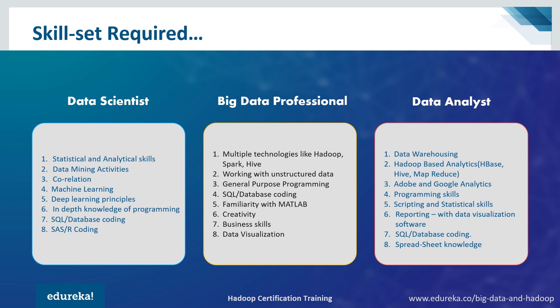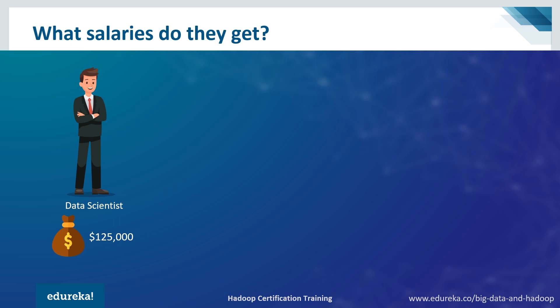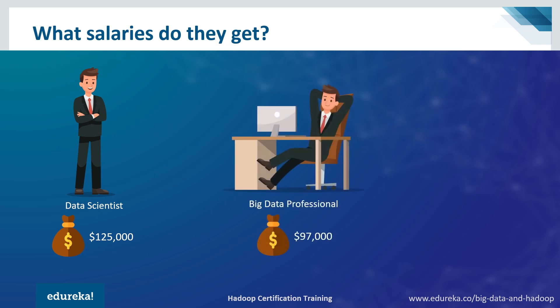Jobs in these three fields are quite high in demand, which rewards you with a fat paycheck. According to PayScale, data scientist is a lucrative career choice in the United States with an average salary of $125,000 per year. A top-level data scientist with extensive experience can earn as much as $148,000 a year — one of the highest paying positions in the entire IT industry. The salary for a big data professional is around $97,000 per year, with a big data developer earning around $95,000 and a big data architect around $115,000 per year. The average salary for a data analyst is $66,000 per year.